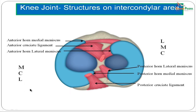The structures attached on the intercondylar area of the tibia — anteriorly, from anterior to posterior: the anterior horn of the medial meniscus, the anterior cruciate ligament, and the anterior horn of the lateral meniscus. Posteriorly, from anterior to posterior: the posterior horn of the lateral meniscus, the posterior horn of the medial meniscus, and the posterior cruciate ligament. These can be remembered with the mnemonics MCL (anteriorly) and LMC (posteriorly).